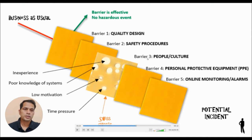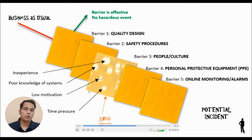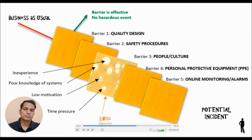Looking at barrier three — people — there can be many human factors involved: inexperience, poor knowledge of the system, low motivation, time pressure, and fatigue. These are the holes in the people barrier that human error can pass through.